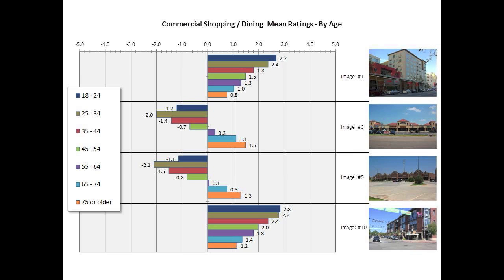When you cross-tabulate these images based upon age, you can see the ages on the right — from 18–24 up to 75 and older. This is the stair-step pattern: amazing consistency throughout all imagery in terms of what younger generations are looking for versus older cohorts. Generally, there's a strong preference among younger cohorts for vertical mixed use and streetscapes, and a stronger preference among older cohorts for large-format, single-use, large-parking-lot development.